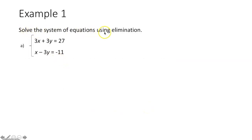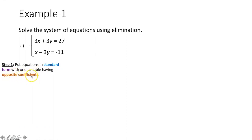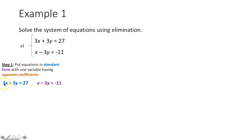Example 1: solve the system using elimination. Step 1 — are these equations in standard form (ax + by = c)? Yes, both are. Now do we have one variable with opposite coefficients? The x terms are 3x and x — not opposites. But the y terms are positive 3y and negative 3y — those are opposite coefficients. We're ready for step 2.